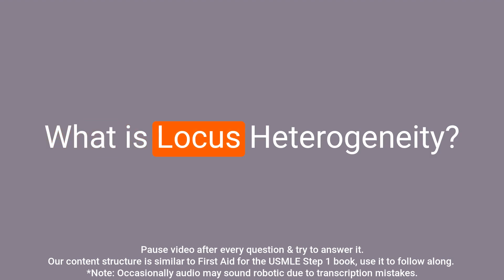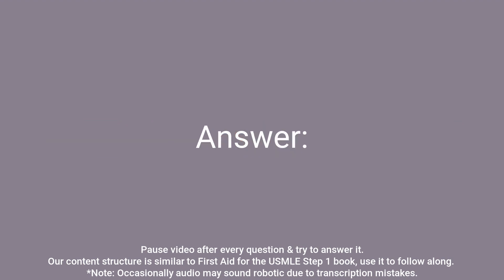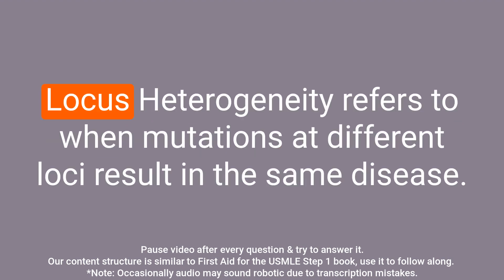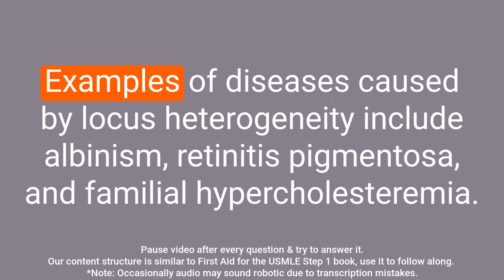Question: What is locus heterogeneity? Answer: Locus heterogeneity refers to when mutations at different loci result in the same disease. Examples of diseases caused by locus heterogeneity include albinism, retinitis pigmentosa, and familial hypercholesterolemia.